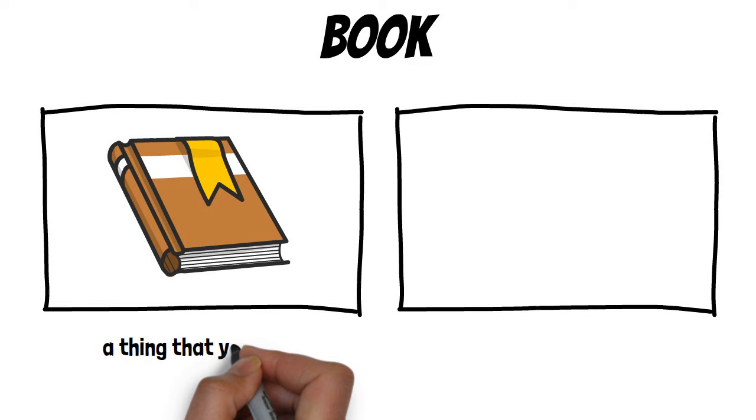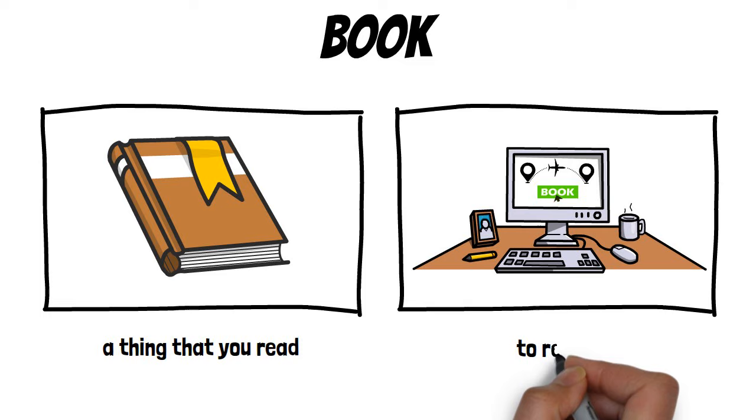Blade: the first meaning is a knife. Book: the first meaning is a thing that you read, and the second means to reserve.